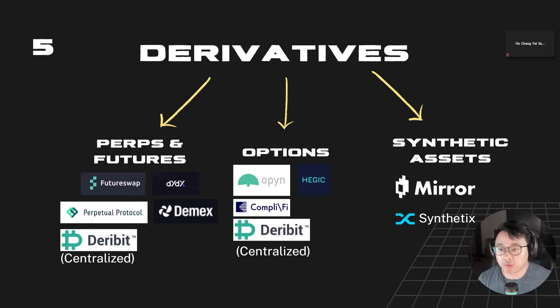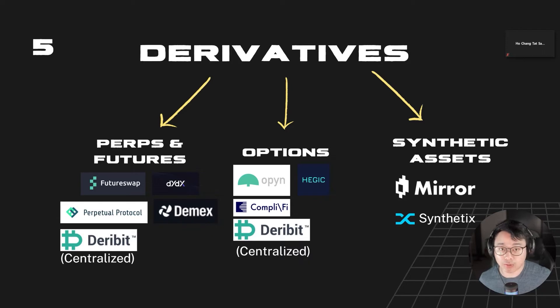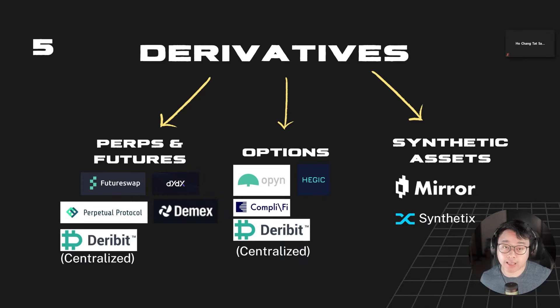Alright, let's start off with derivatives. As its name suggests, derivatives derive their value from an underlying asset. There are a few common types of derivatives, mainly perpetuals — also known as perps — futures, options, and synthetic assets.